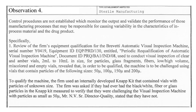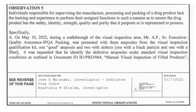Observation number four: control procedures were not established to monitor the output and validate the performance of manufacturing processes responsible for causing variability in in-process and drug product characteristics. Auditors reviewed the equipment re-qualification document of the visual inspection machine. Per the qualification document, the machine should be challenged using vials containing particles of 50, 100, 150, and 200 micron sizes. However, the firm used an internally developed napkit with particles of unknown sizes. When asked, quality confirmed they do not use vials with 50-micron particle sizes.